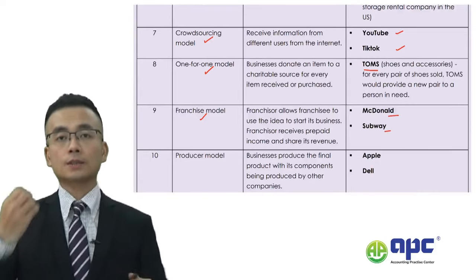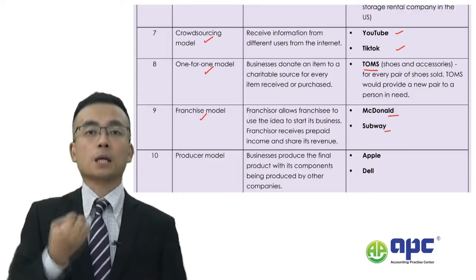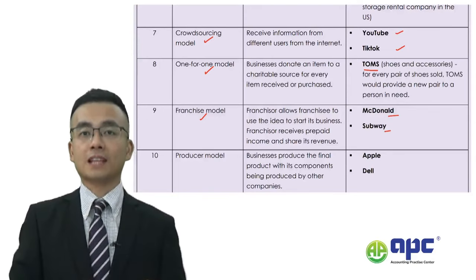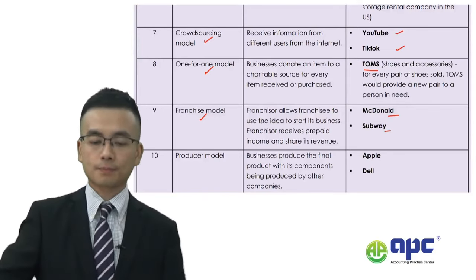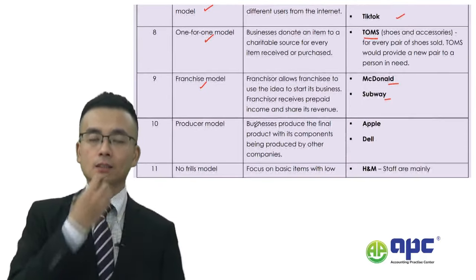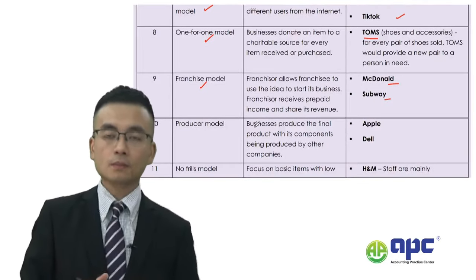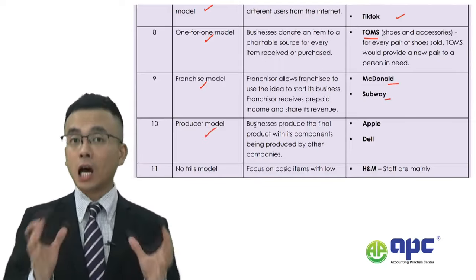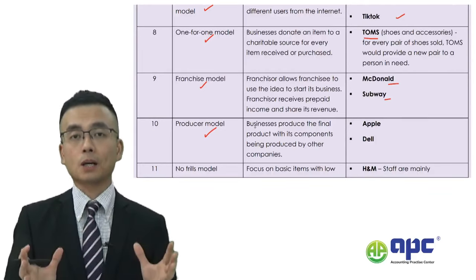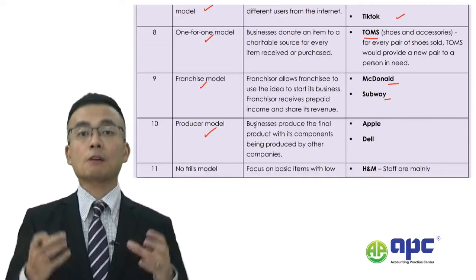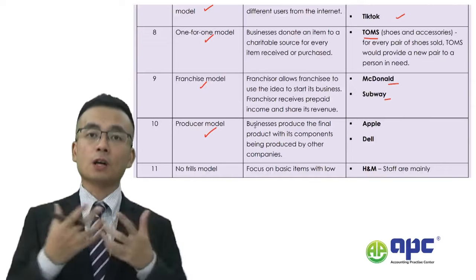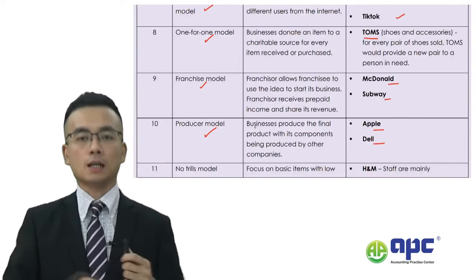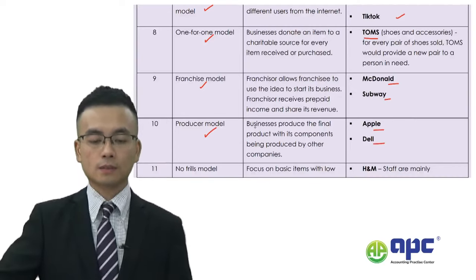For McDonald's, they receive the franchise fee upfront payment from the client, and then utilise this payment to buy land in different cities for long-term investment. The producer model, on the other hand, allows different outsourcing parties to assemble products, but the company does the final assembly work at its head office. For example, Apple and Dell computer use the producer model.